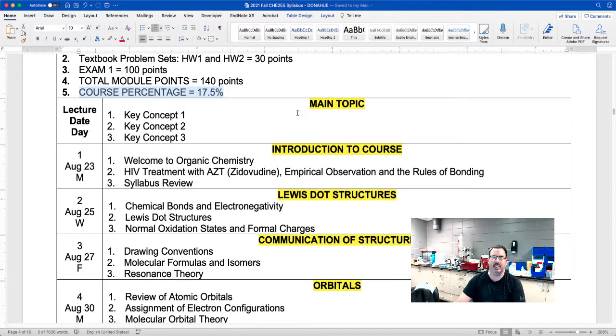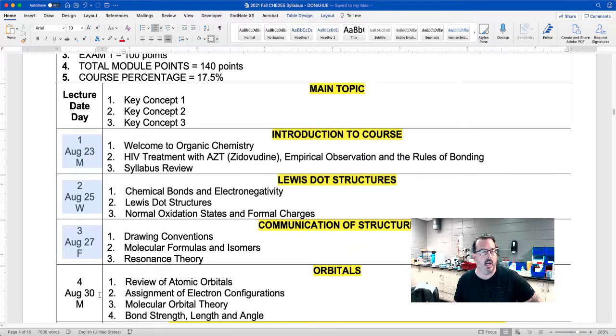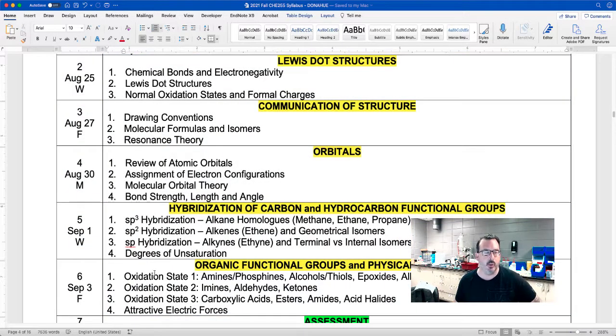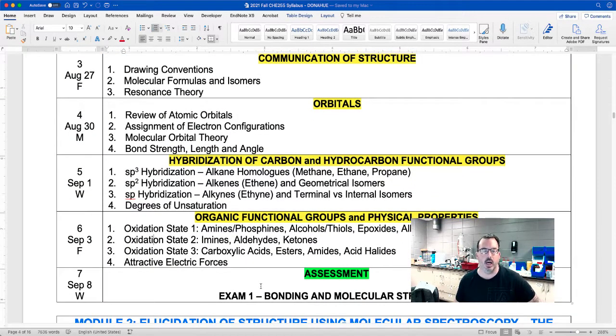So here's the actual schedule of the lecture materials. You have your lecture day and date. So there's about three to four main topics for each lecture. So for example, our first lecture on August 23rd, which is Monday. We'll have a welcome to organic chemistry. We'll look at a molecule called AZT. Through empirical observation, we'll talk about the rules of bonding and a little bit about the syllabus review. Not much because that's what this video is intended to do. So for example, if we look for module one, there are six lectures that we're going to go through for chapters one and two before we get to the exam one.